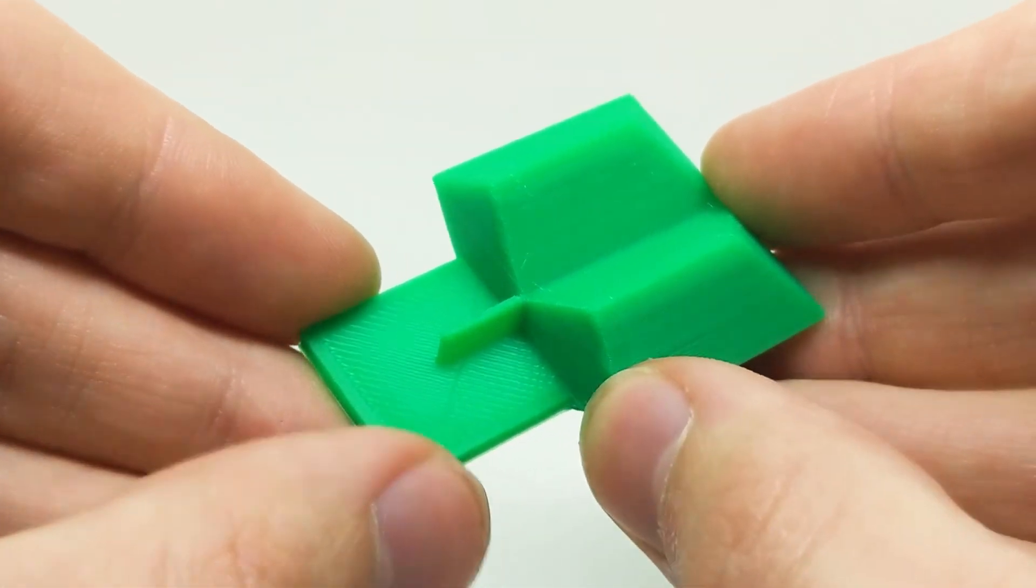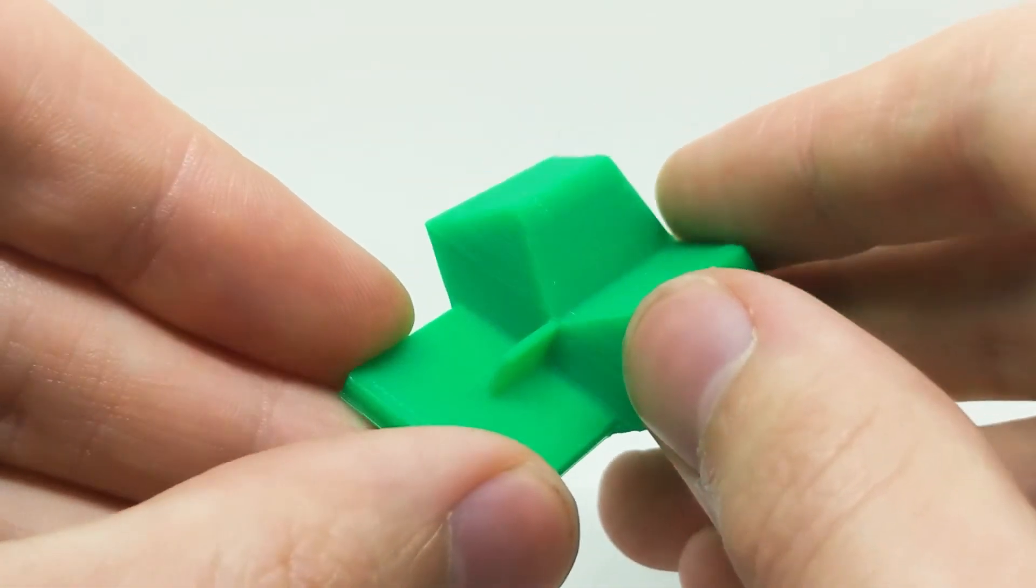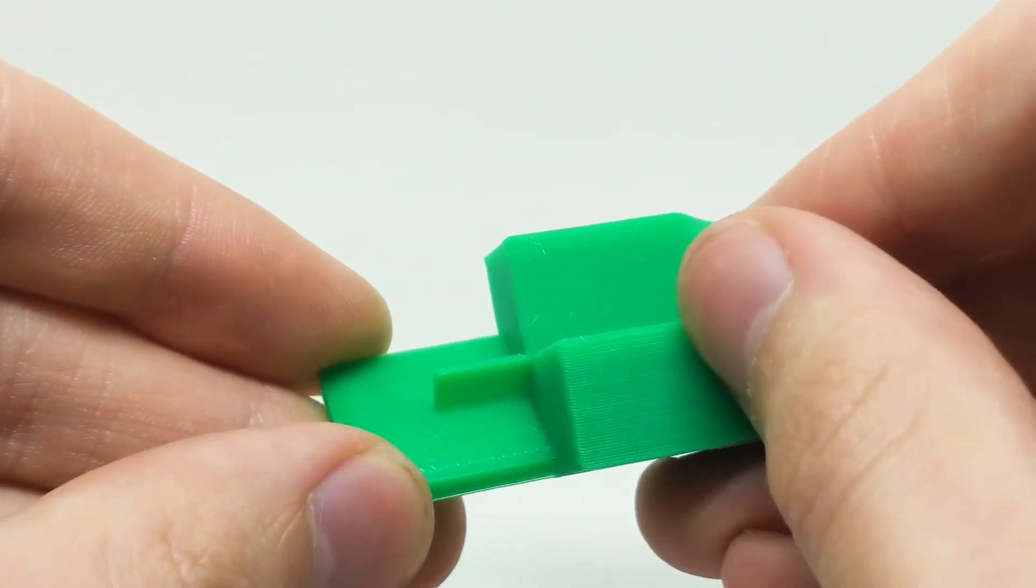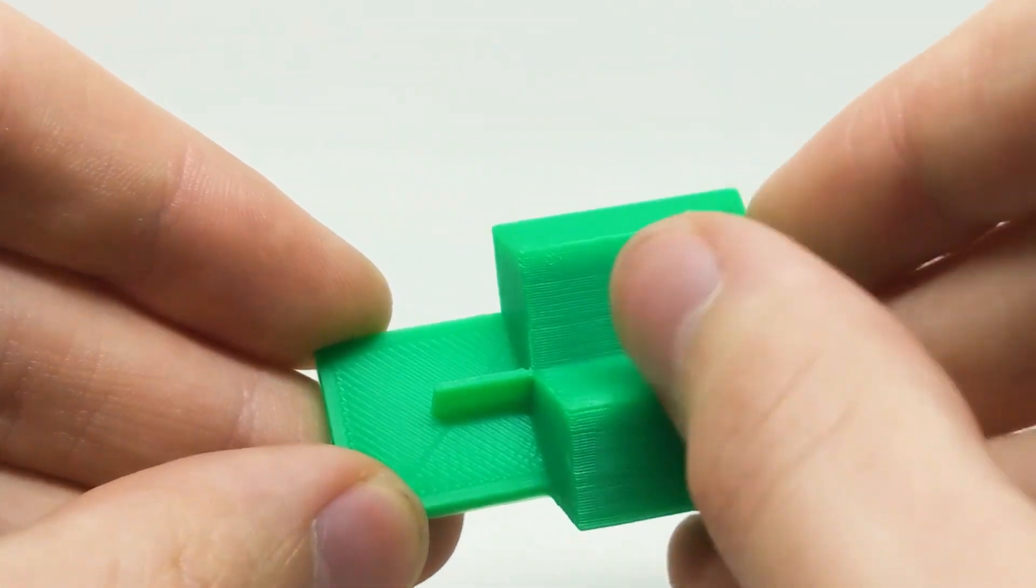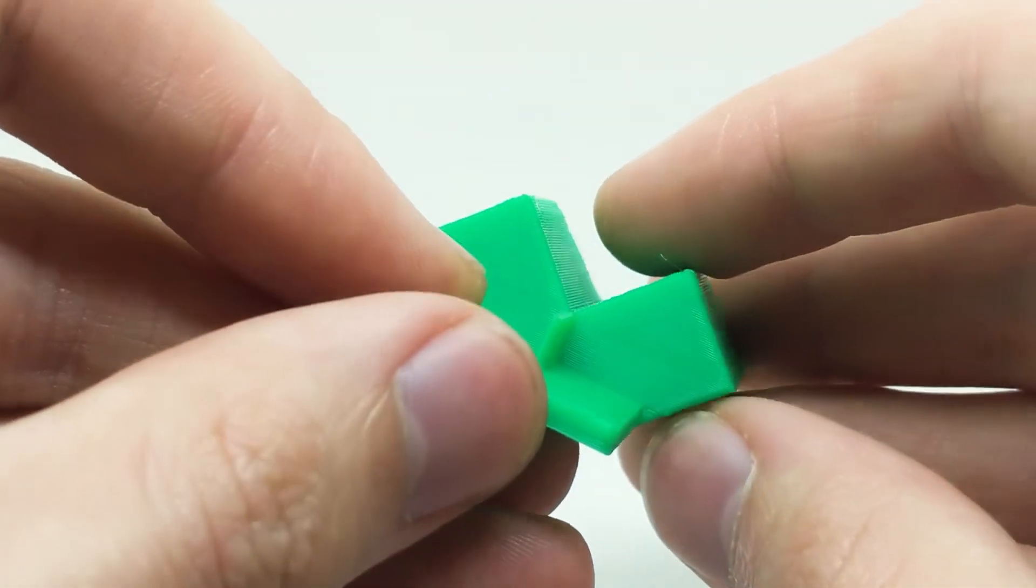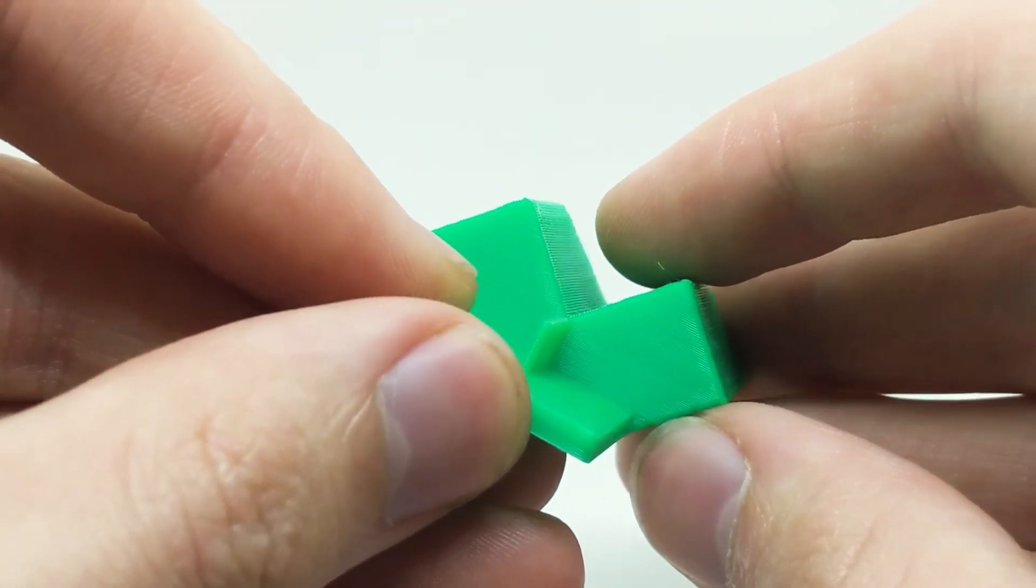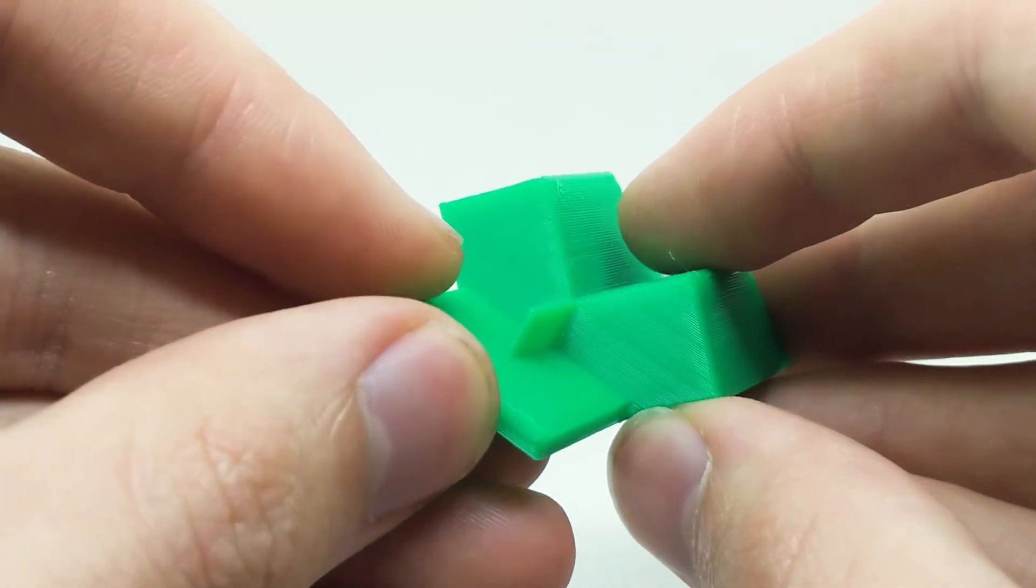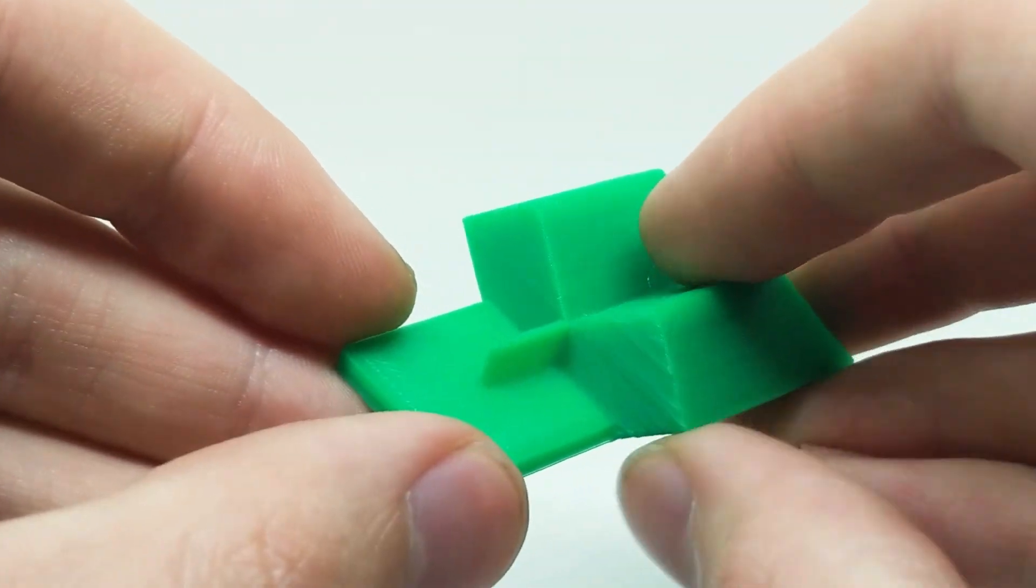So here is the print at 105% extrusion multiplier. You can see it doesn't have that bulging that we're seeing at these tips here. And the flat surface isn't too bad. We do have that slight little bit of filament sticking out there, but it's definitely not as bad as the 111% extrusion multiplier print.